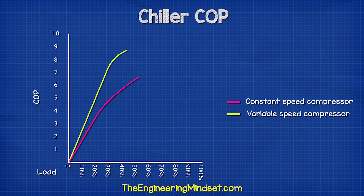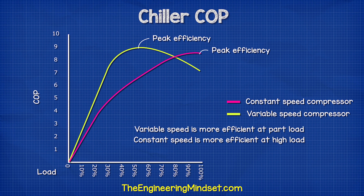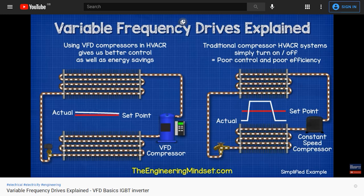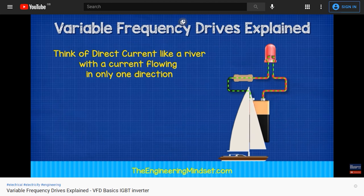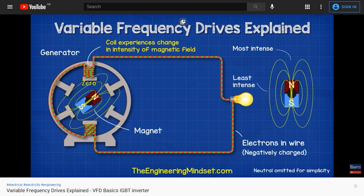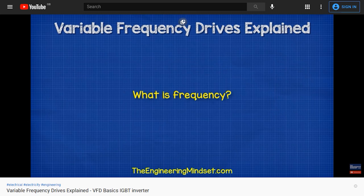We can see from these charts that the variable speed compressors generally do not perform efficiently at full load because of the inverter losses. So at full load, it is usually more efficient to run a constant speed compressor chiller. You can also learn how variable frequency drives work in detail in our previous video — I'll leave a link in the video description below.